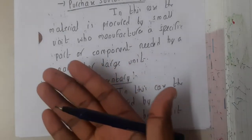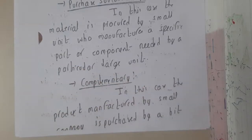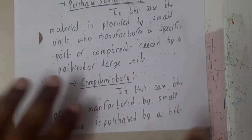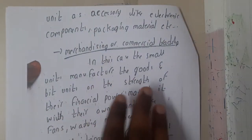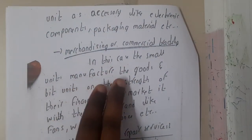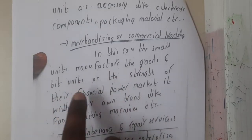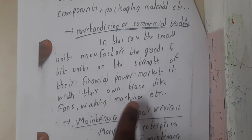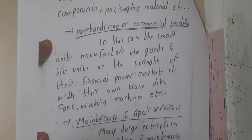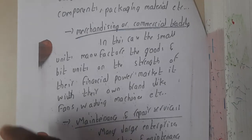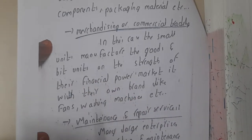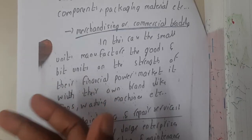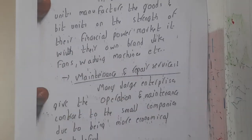Similarly, complementary linkage — from the name itself you can see it involves giving something and receiving something in return. Next is merchandising or commercial trading. In this case, the small unit manufactures goods — small components — and on the strength of their financial and market power, sells them with their own brands, like fans, watches, and machines. These things have really small components which can be built by a small industry, even if the scale of production is less.